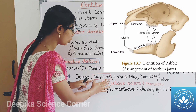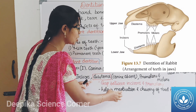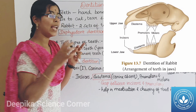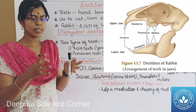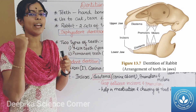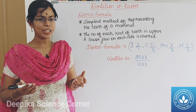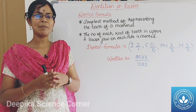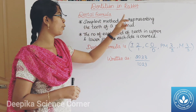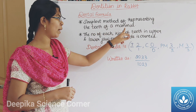This gap helps in the mastication and chewing of food in herbivore animals. In herbivore animals, the food is chewed thoroughly. In the rabbit, there are several teeth. The dental formula is the simplest method of representing the teeth of a mammal.